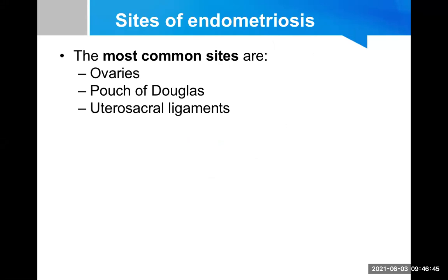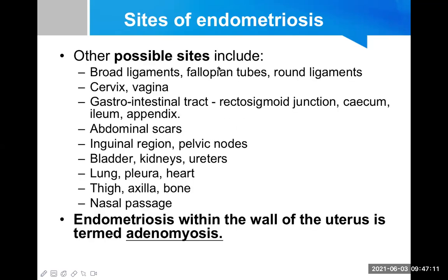The most common sites of endometriosis are: number one, ovaries; number two, pouch of Douglas or cul-de-sac; and number three, uterosacral ligament. These are the most common sites, followed by many others.